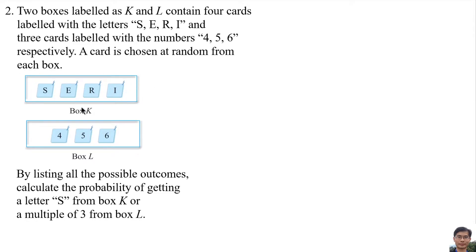A card is chosen from box K and then another card is chosen from box L. The possible outcomes are: S4, S5, S6, E4, E5, E6, R4, R5, R6, I4, I5, I6.